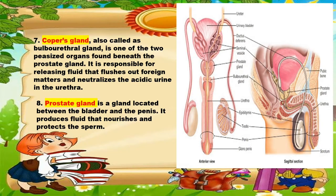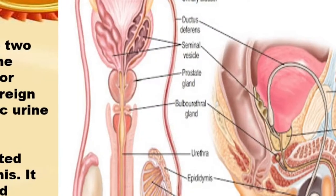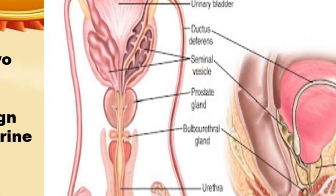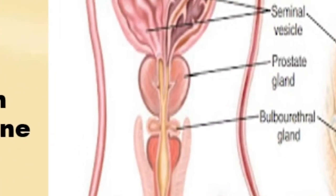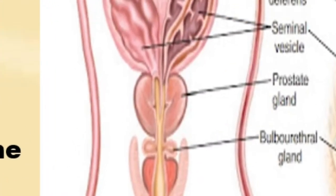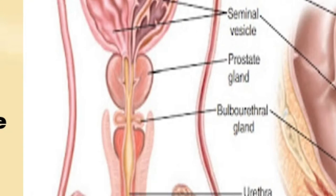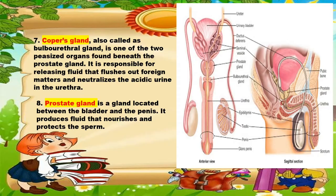Next is the prostate gland. It is a gland located between the bladder and the penis. It produces fluid that nourishes and protects the sperm.